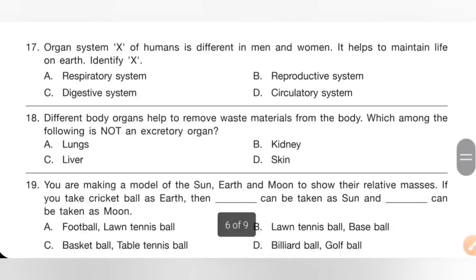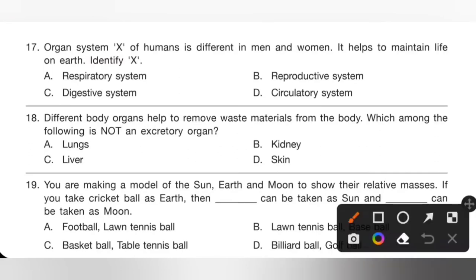Question 17: Organ system X of humans is different in men and women, and it helps to maintain life on earth. Identify X. Option A — respiratory system — is the same in men and women. Option B — reproductive system — is the correct answer. The reproductive system contains special organs for producing babies, and men and women have different reproductive systems.